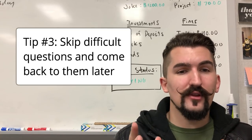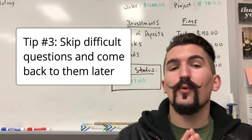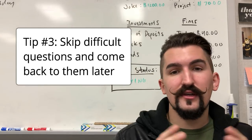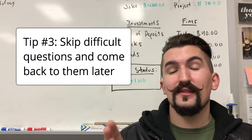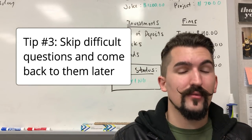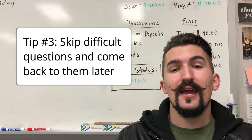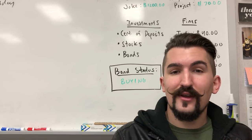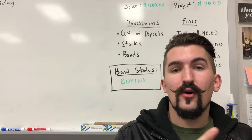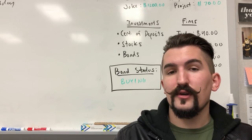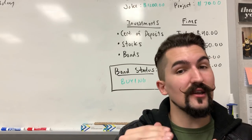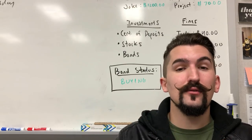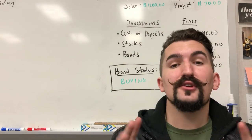It should go without saying but you should skip any questions that seem unclear or difficult, as you only have 55 minutes — that's roughly one minute per question — and you do not want to be caught up trying to figure out a confusing or difficult question. You should be gunning for the easy points and going back to those more difficult questions.